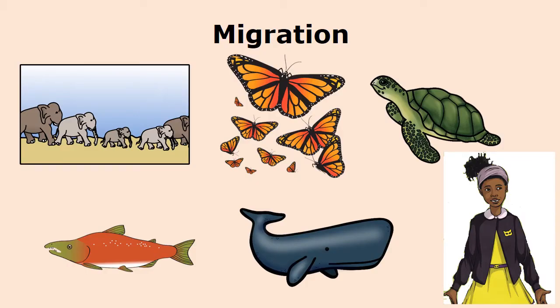Here are animals that migrate. We have the monarch butterfly, the green turtle, the whale, the salmon, and also the elephants.